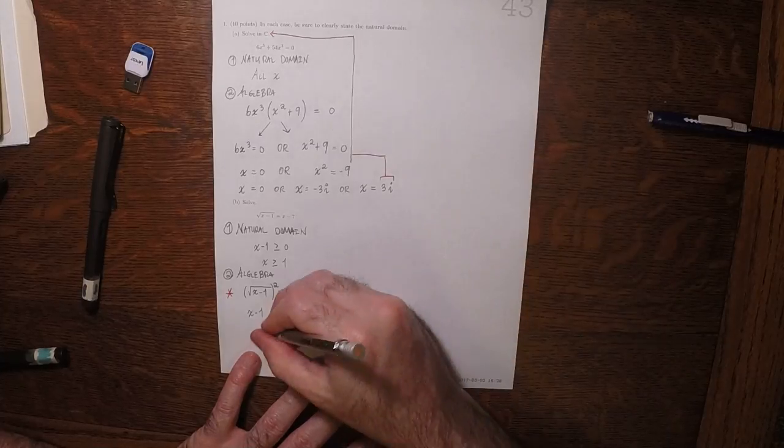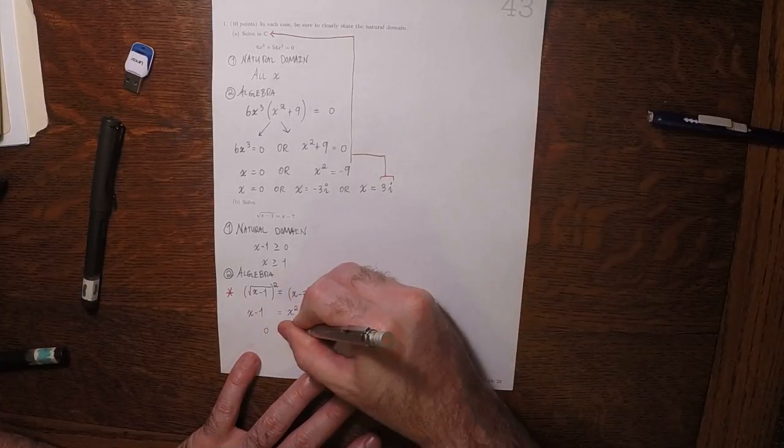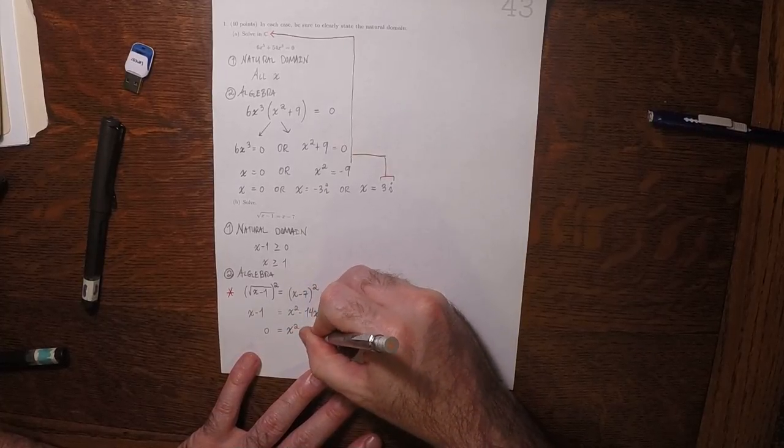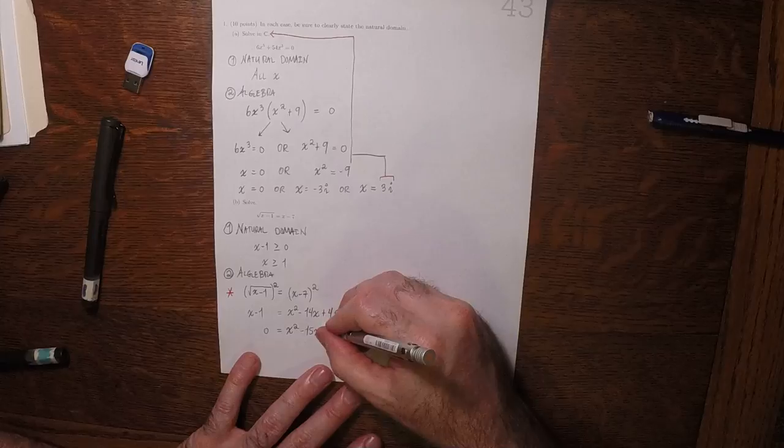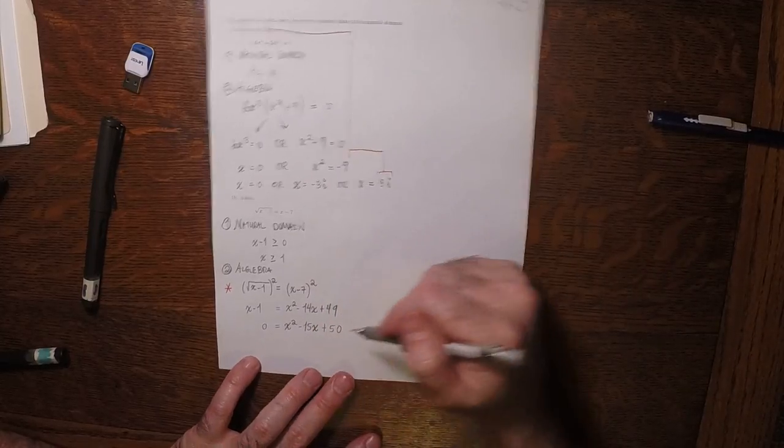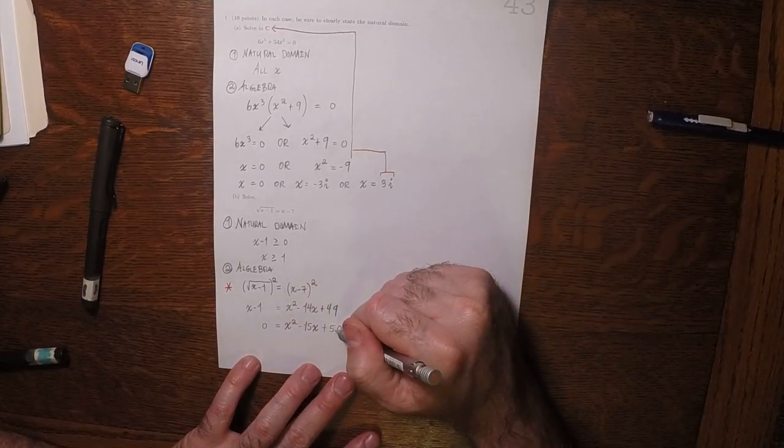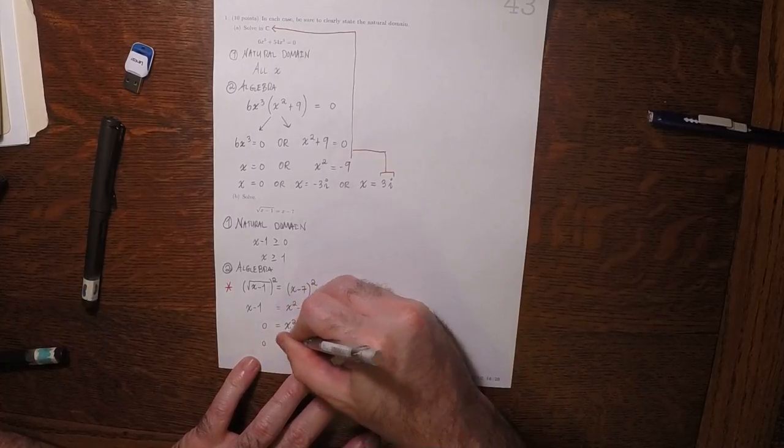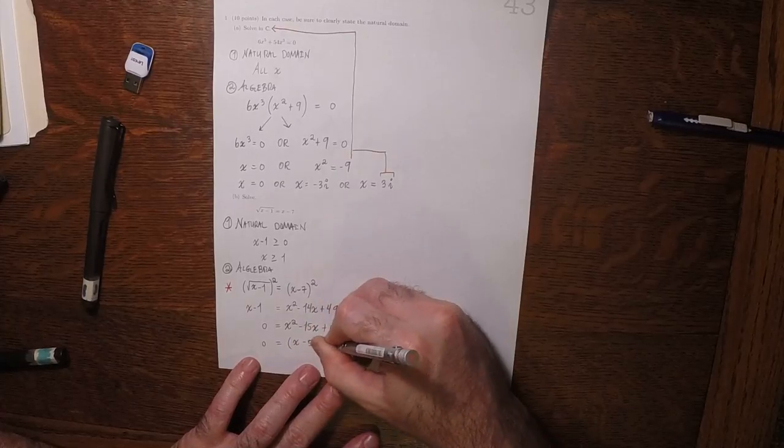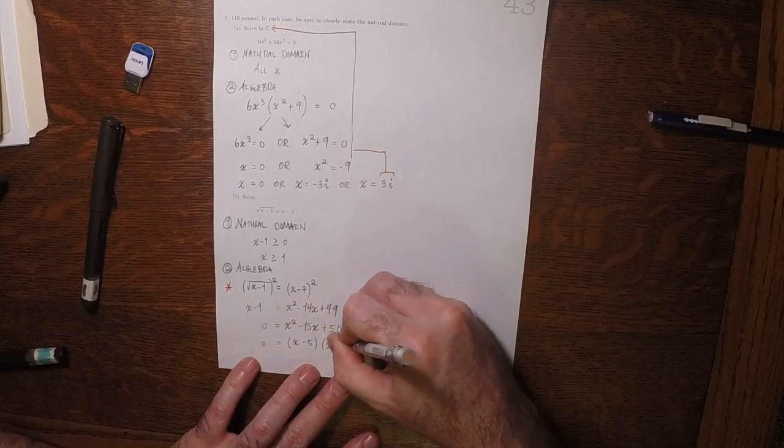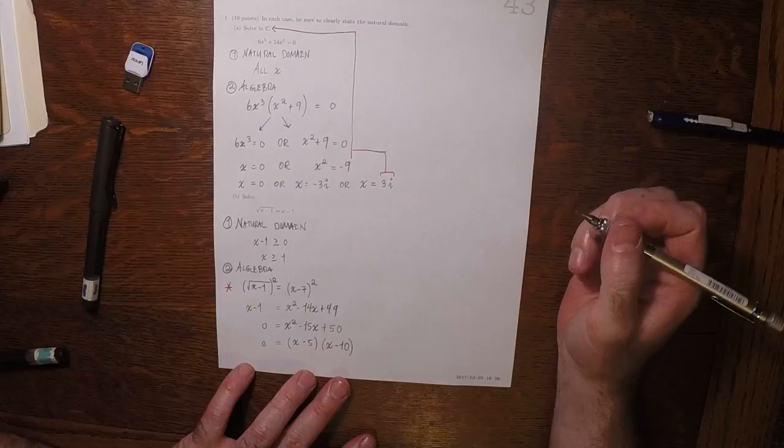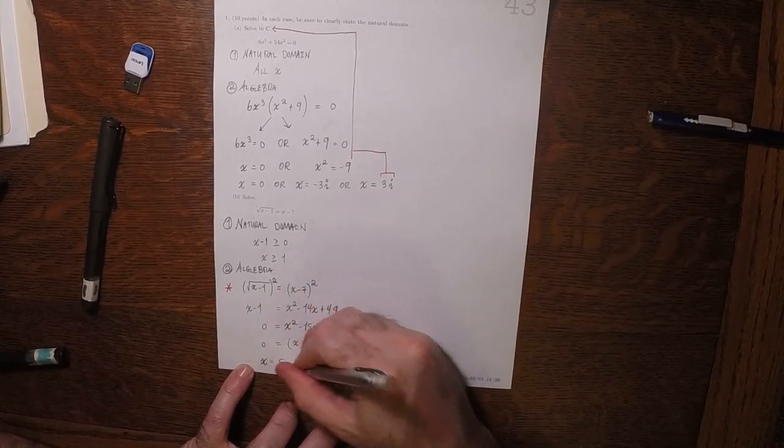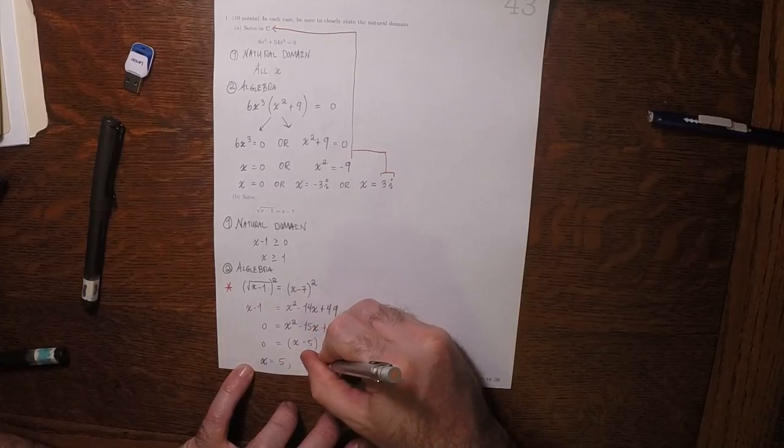That would be x minus 1 equals x squared minus 14x plus 49. Now moving everything to the other side, we get 0 equals x squared minus 15x plus 50. Can we think of two numbers whose product is positive 50 and whose sum is negative 15? Sure, x minus 5 and x minus 10. So the solutions are x is 5 and x is 10.